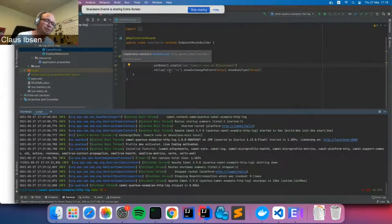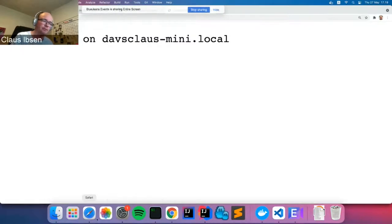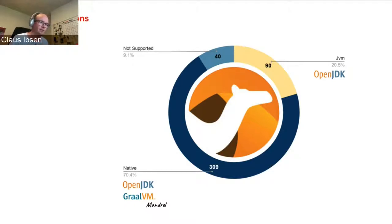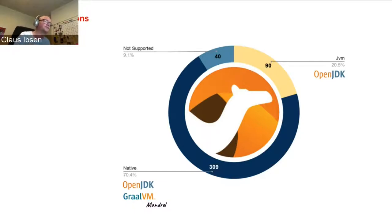That's it for the Camel Quarkus little demo. You can find the examples from the Camel website where we have links to all the examples for the different sub-products in Camel. In the Camel Quarkus project, these are called extensions. We are porting all Camel components as extensions. 309 are ported and working in JVM mode. There are about 90 that are JVM mode only — not fully supporting native compilation yet — and some that are not supported because they don't make sense to run on a cloud-native or Quarkus platform.